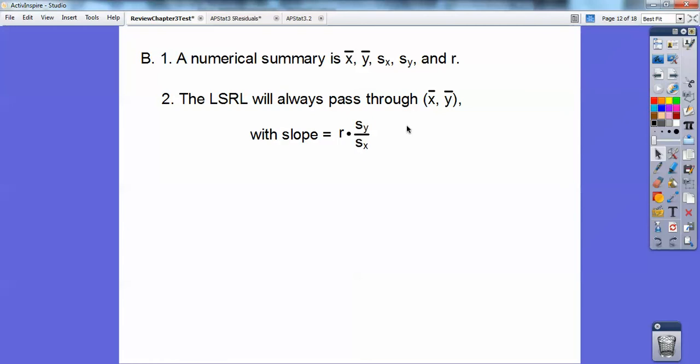So that's enough information to write an equation of a line. Y equals mx plus b. Here's the ordered pair right here. And then here's the slope. You get the slope right here and plug everything in.